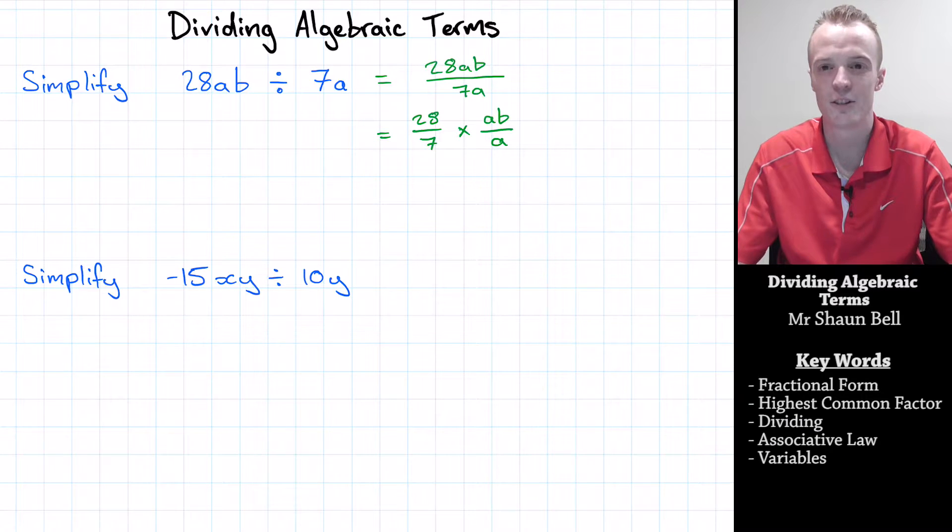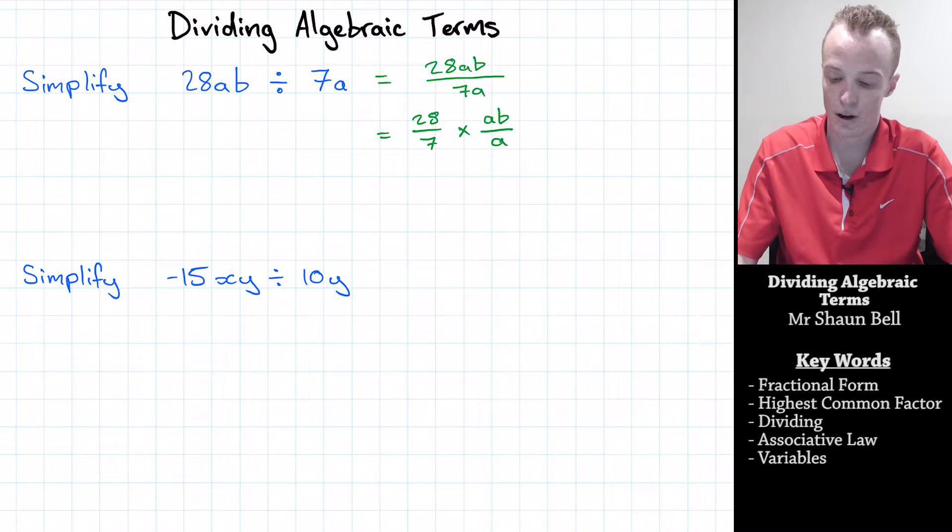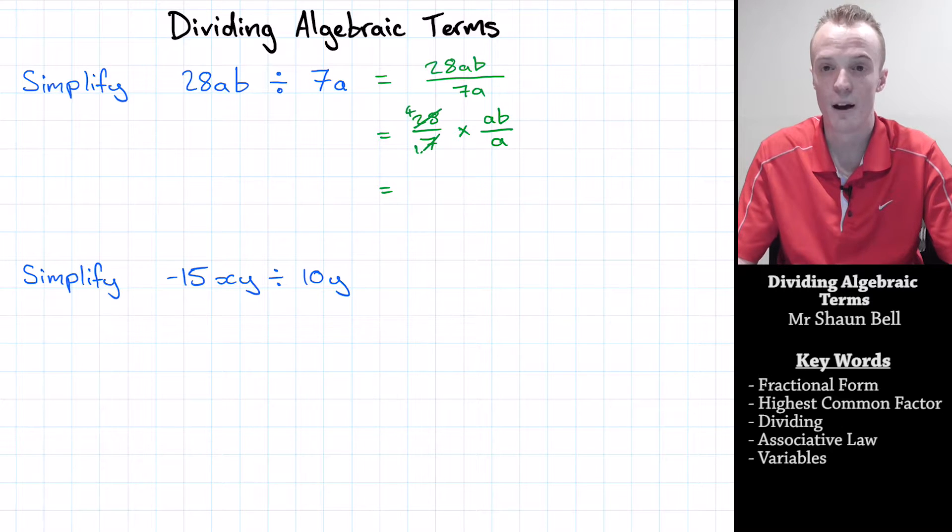Now we deal with each fraction individually. The number fraction we simplify by finding the highest common factor, the biggest number that divides into both. The biggest number that divides into 28 and 7 is 7. So it divides into 28 four times and divides into 7 once. What we're left with is 4 divided by 1, which equals 4, and that's going to multiply the other fraction.